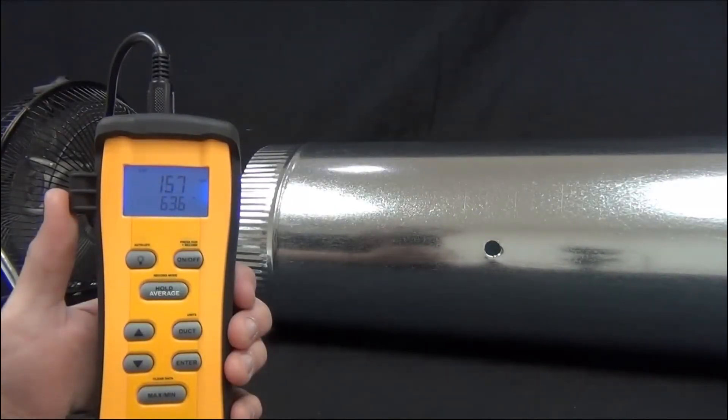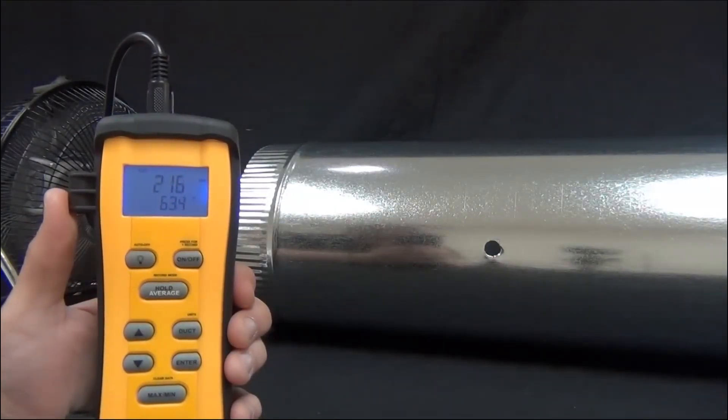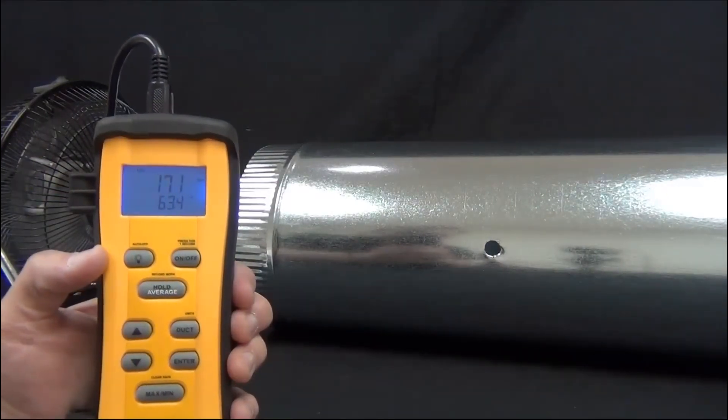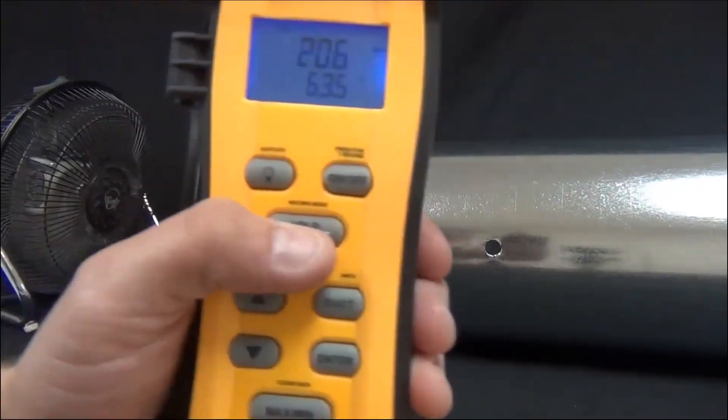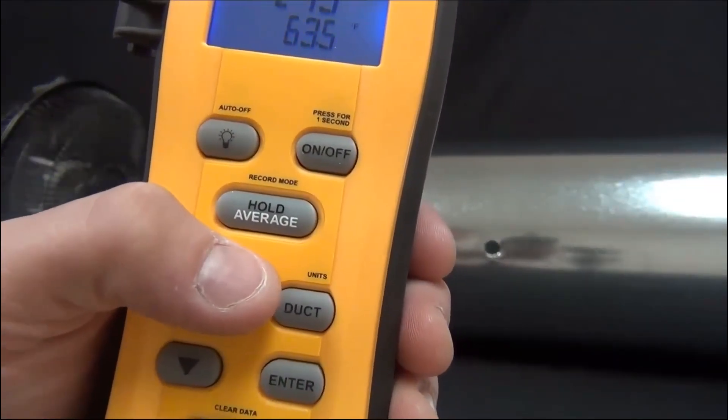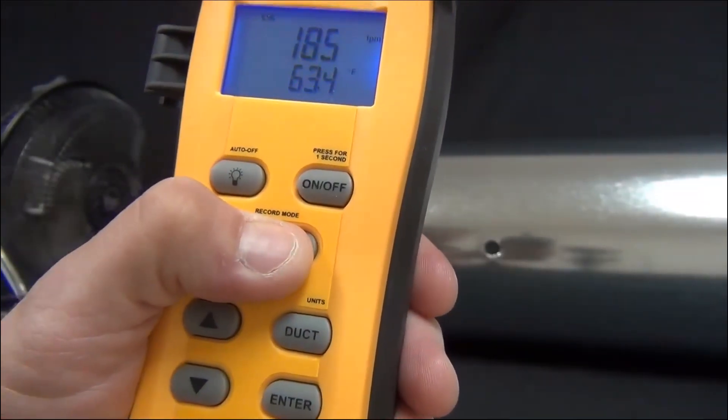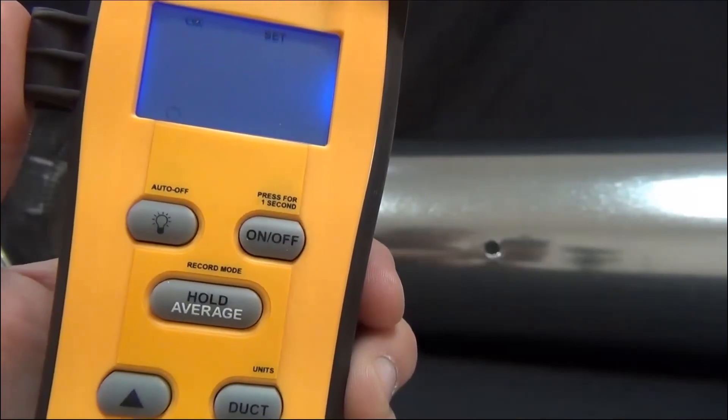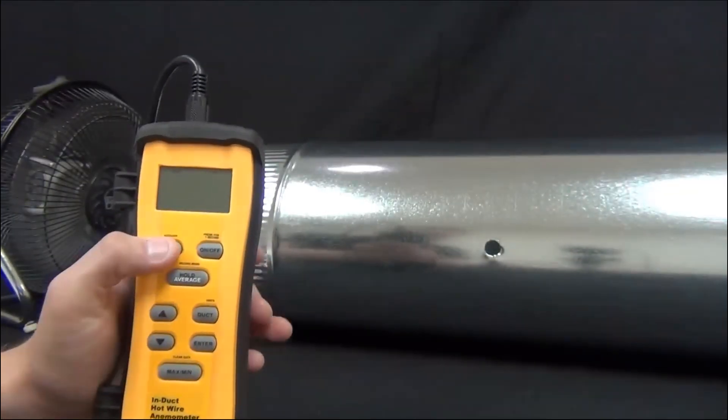The main function of the STA-2 is to get an accurate average CFM across the duct. The STA-2 does this in a couple different ways. The first way I'm going to show you is a timed average. So to get into record mode, you press the button above where it says record mode, it's the hold average button. So I'm just going to press and hold that down. And then you'll see that little stopwatch blinking that is the signal for a timed average. So I'm going to press enter to select that.